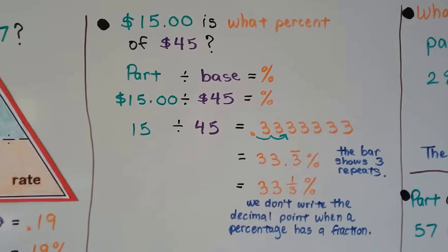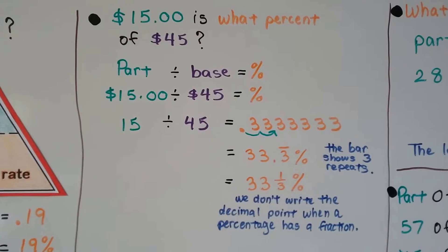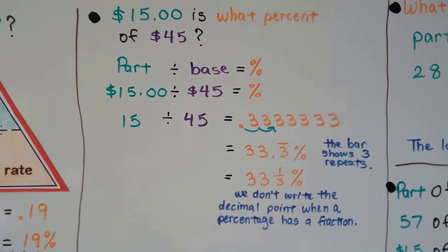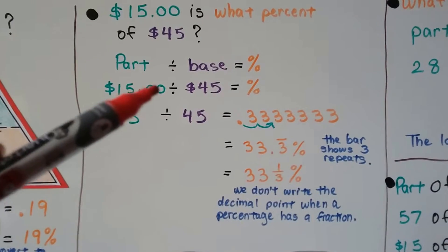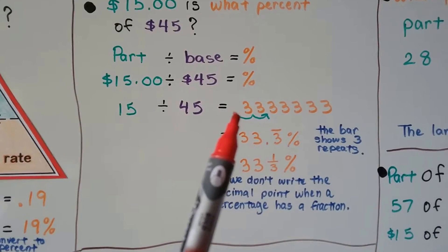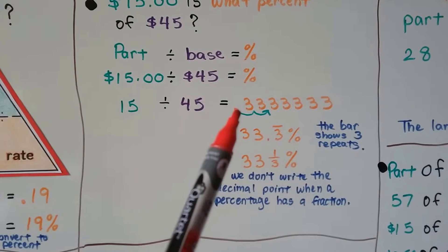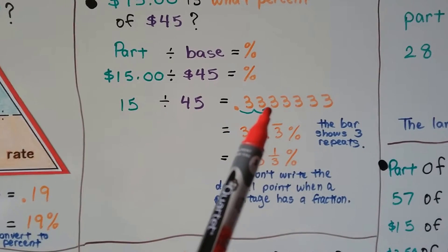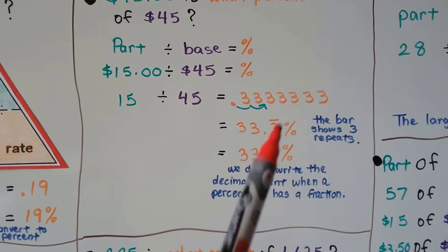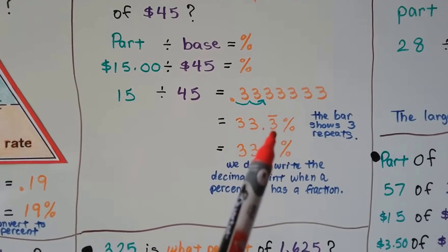$15 is what percent of $45? We're going to do the part divided by the base to get the percentage. So $15 is the part, $45 is the base. We do 15 divided by 45, and the calculator is going to show a decimal point followed by repeating threes. We need to convert it to a percentage by moving the decimal point back two hops, and now we have 33.3̄ percent.